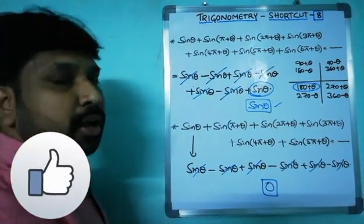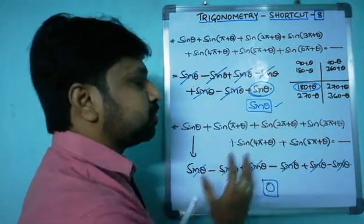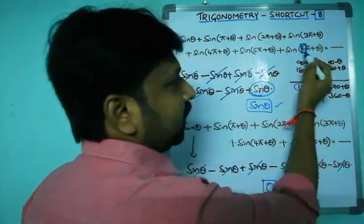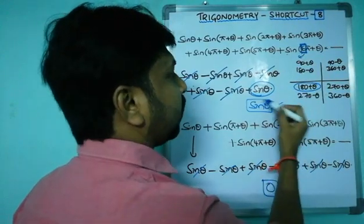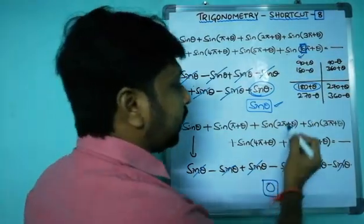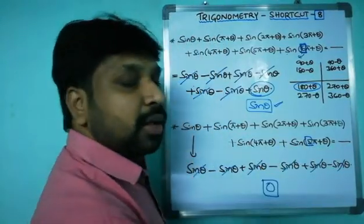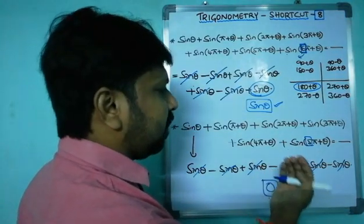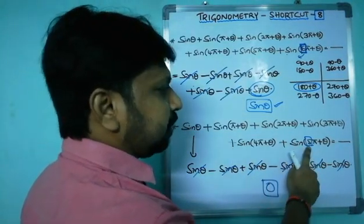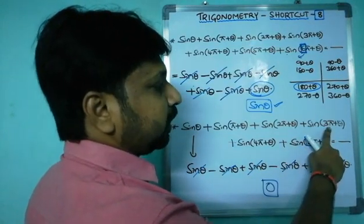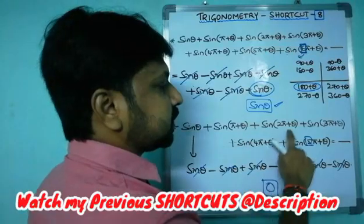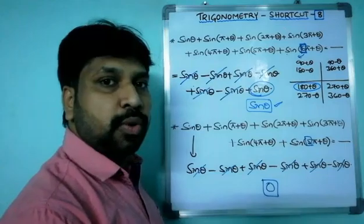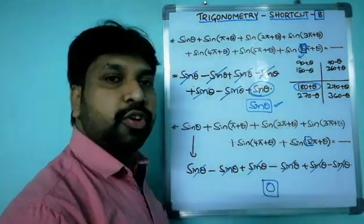So what can we conclude? Whenever the value of n is an even number — six is even — you are going to get sin theta. Whenever n is an odd number — five is odd — the value you get is zero. For example, if you consider 3pi, that is n equals 3, an odd number: plus sin theta, minus sin theta, plus sin theta, minus sin theta — all cancel to zero. So wherever an odd number appears, you get zero; wherever an even number appears, you get sin theta.